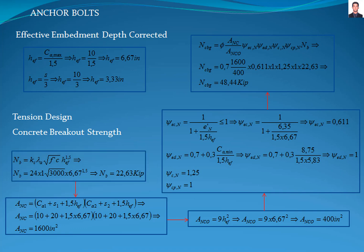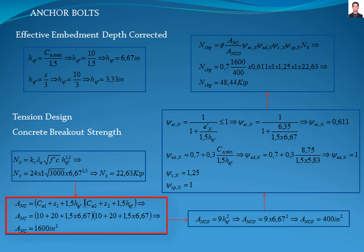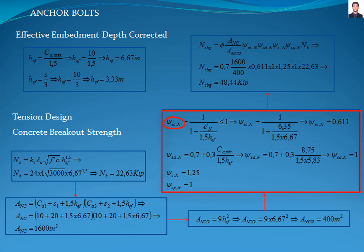The next step is calculating the projected concrete failure area of the anchor group, ANC, according to figure R17.6.2.1 of the ACI 318 standard, giving a result of 1,600 square inches, and the projected concrete area of a single anchor ANCO, according to equation 17.6.2.1.4, giving a result of 400 square inches. The next step is calculating the breakout eccentricity factor, edge effect factor, breakout cracking factor, and breakout splitting factor with the equations of sections 17.6.2.3, 4, 5, and 6, respectively, giving results of 0.611, 1, 1.25, and 1.